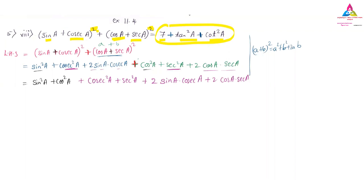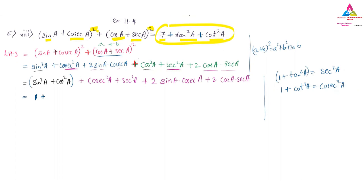Now applying identities. First: sin²A + cos²A = 1. Next, cosec²A = 1 + cot²A — so instead of cosec²A I write 1 + cot²A. We are applying all the standard identities here.